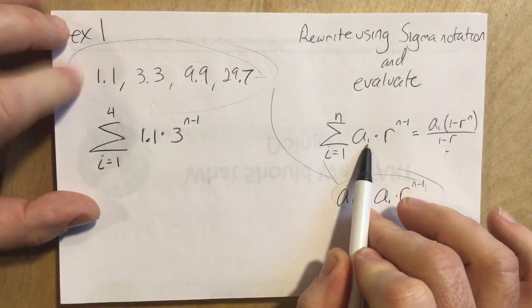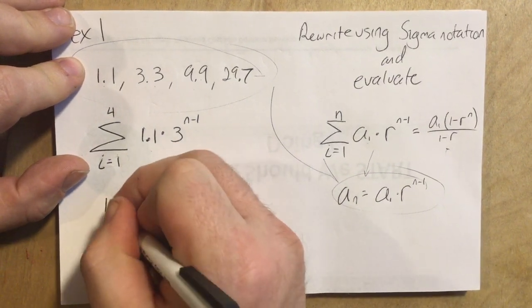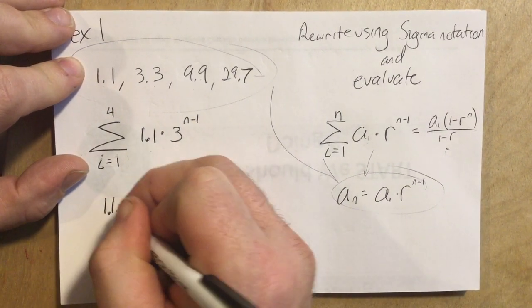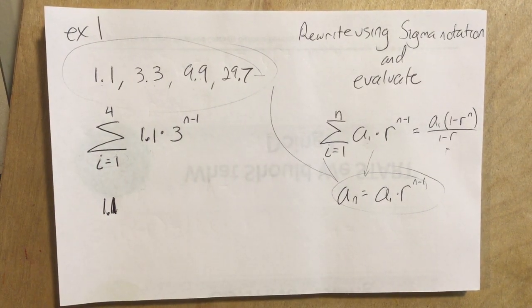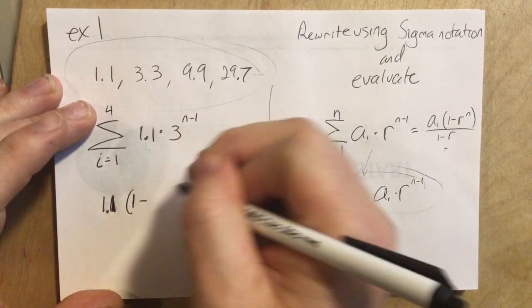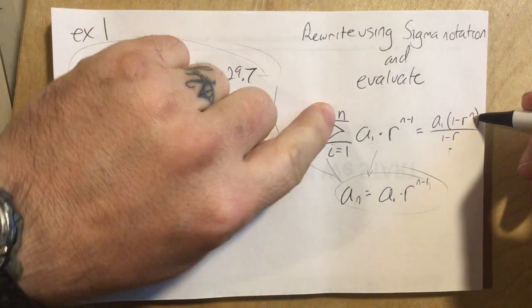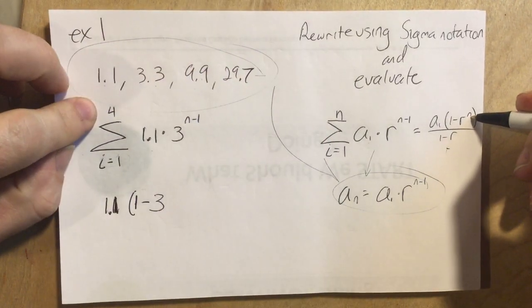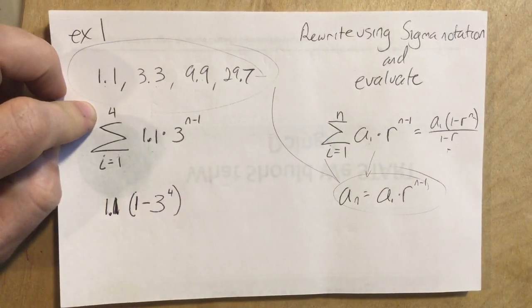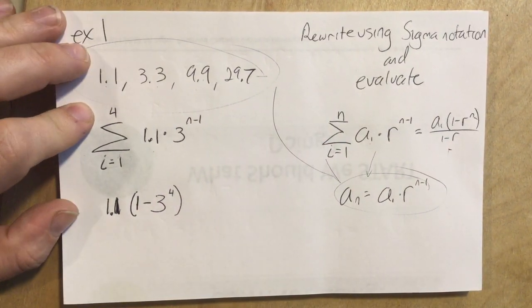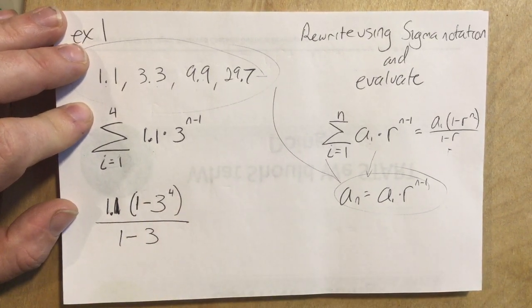Notice there's a sub 1, a sub 1, a sub 1. That's the formula. A sub 1 is 1.1 multiplied by 1 minus r. That's 3 to the n, meaning this number up top of the summation notation of the sigma notation. So to the 4th, 1 minus r to the n over 1 minus r. r is 3. There we go.